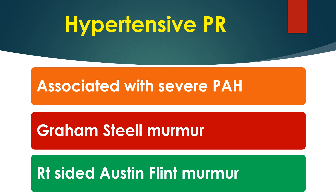The murmur is heard in the pulmonary area and left sternal border, resembling the murmur of aortic regurgitation. It may be heard in Eisenmenger syndrome, severe primary pulmonary arterial hypertension, and severe pulmonary hypertension secondary to left heart diseases like severe mitral stenosis. The murmur starts early in diastole after a loud P2.